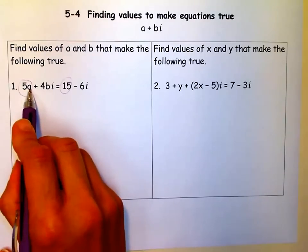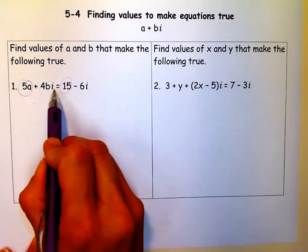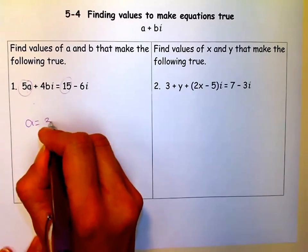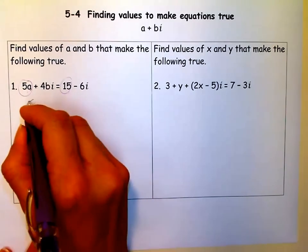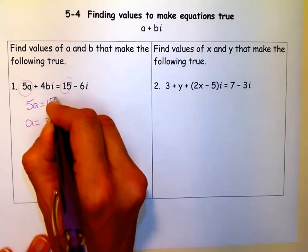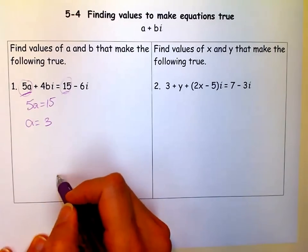So if we want to know what A is, we say, if 5A equals 15, A must be 3, because that's the only way, 5 times 3 is 15. And you can set up an equation if you'd like, you can set up the real part on the left side equal to the real part on the right side.